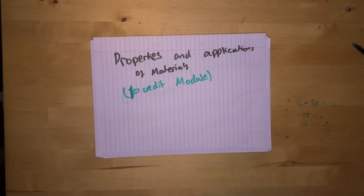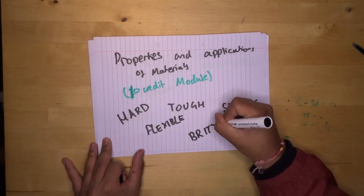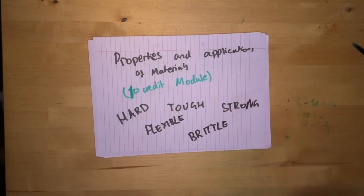You learn about properties such as materials and whether they are hard, tough, strong, flexible and brittle. So yes, hard, tough and strong are all different properties.